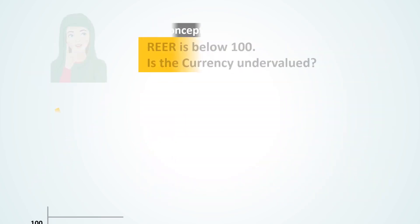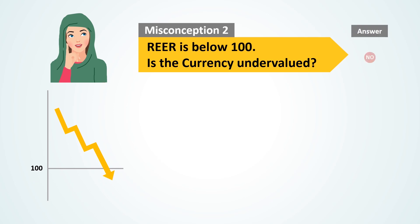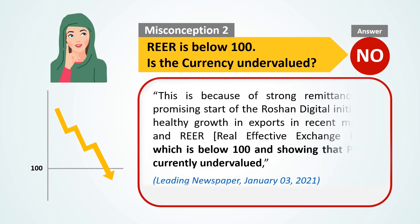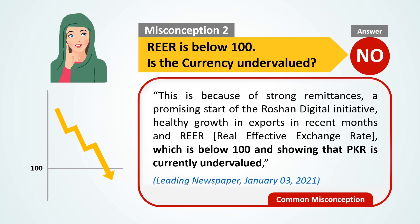And second, movement of the REAR index away from its base year value of 100 is often interpreted as the overvaluation or undervaluation of the Pakistani rupee. The base year for REAR is just for reference, and doesn't imply that the currency was in equilibrium during that year. For example, if the REAR index is at 95 and the value for the base year is 100, it doesn't necessarily mean that the currency is undervalued by 5% compared to the base year.